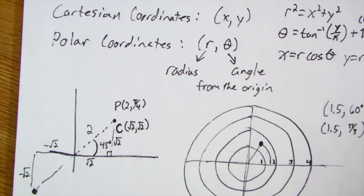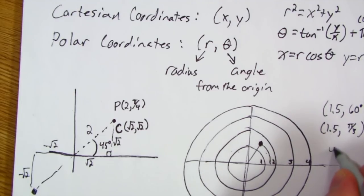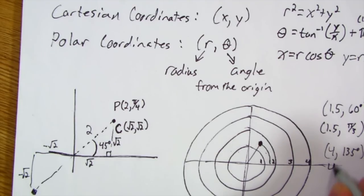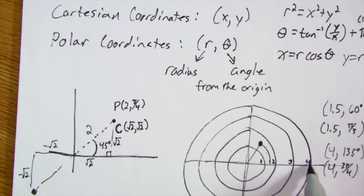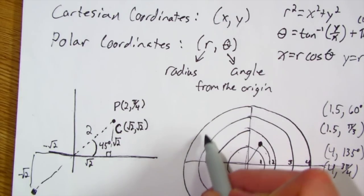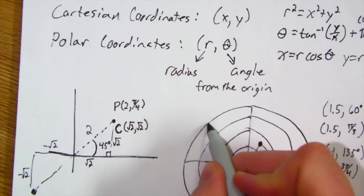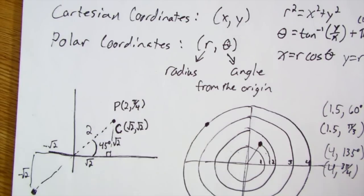If I had 4 comma, let's say 135 degrees, which is the same as 4 comma 3π over 4, well, that would be on the 4 unit circle, and be all the way over here at 135 degrees, so that my point would be right about there.